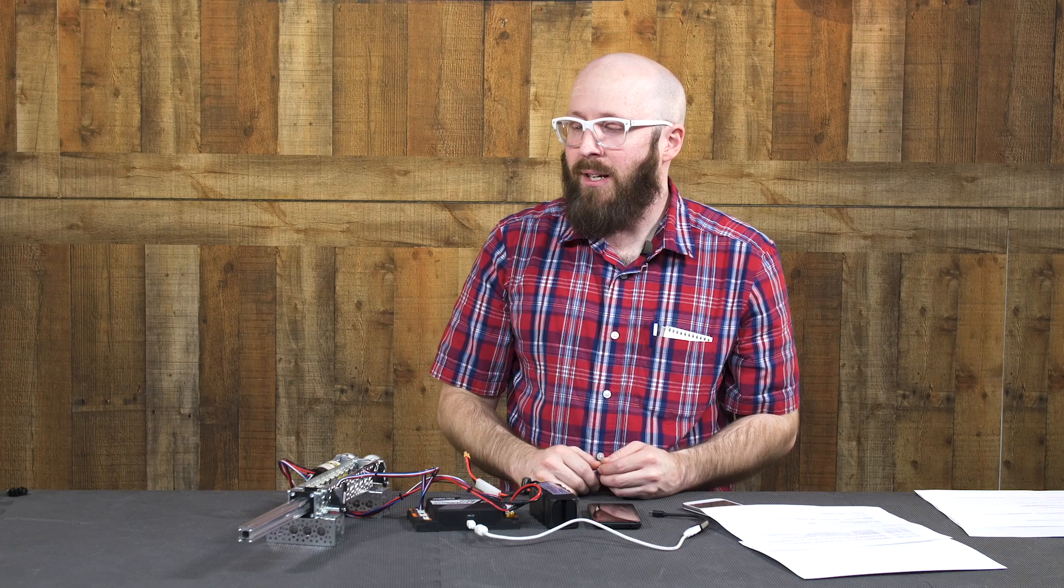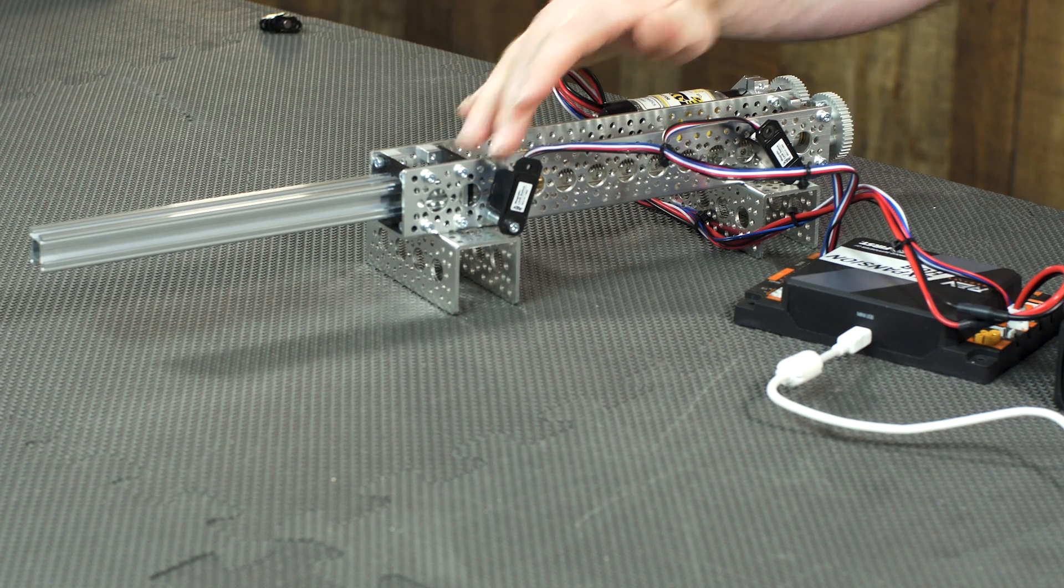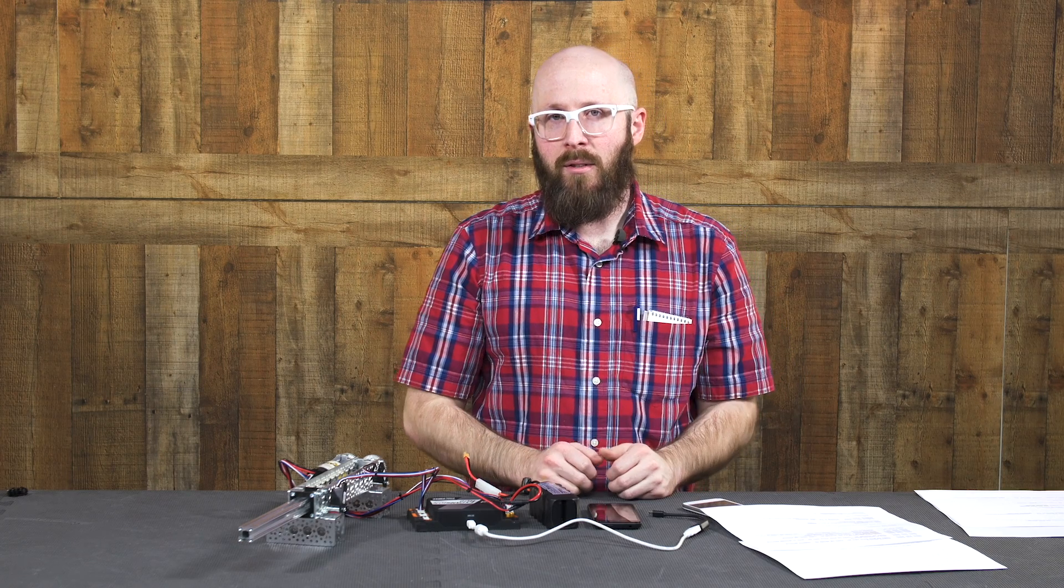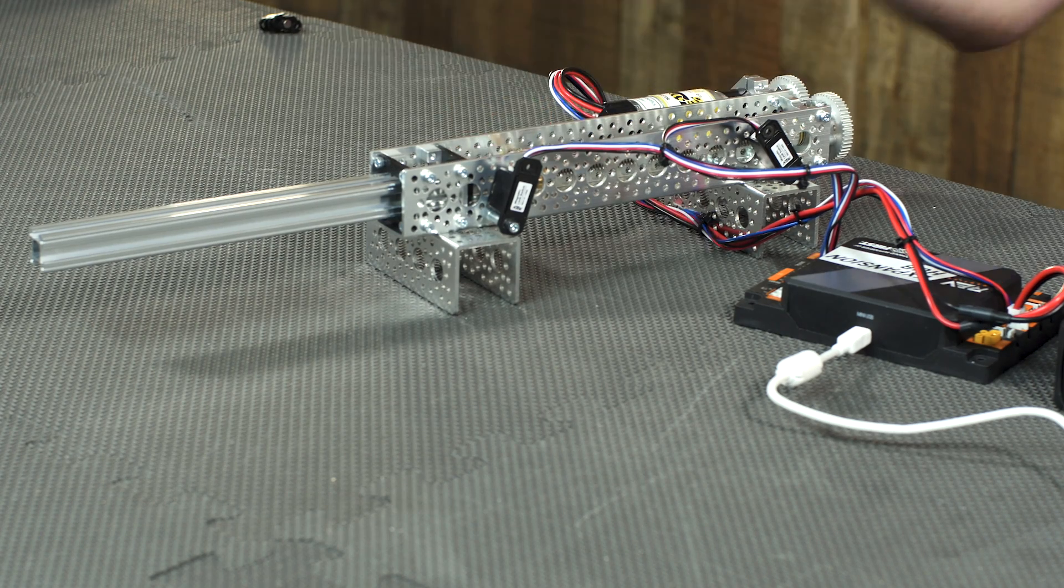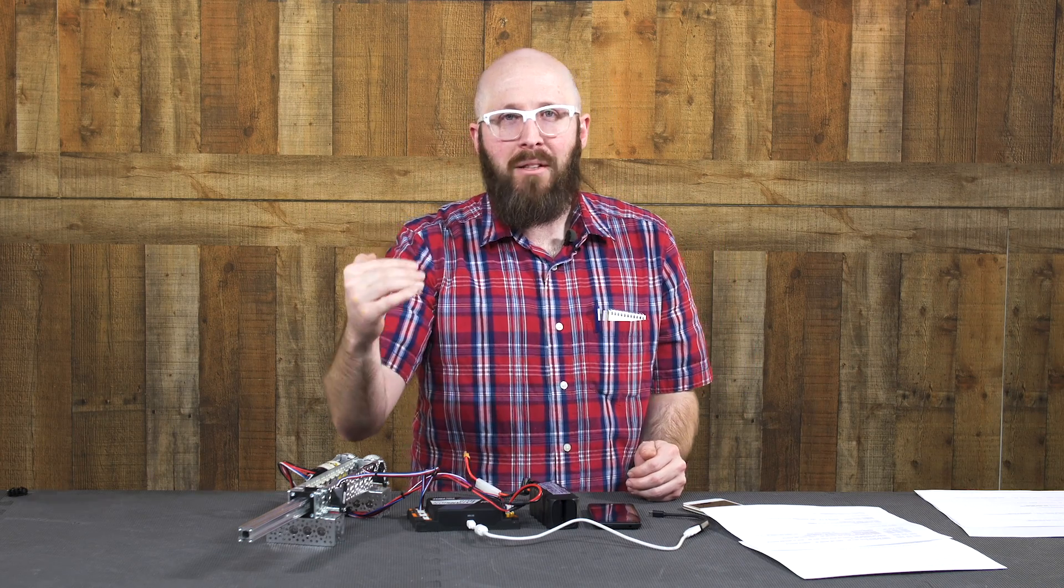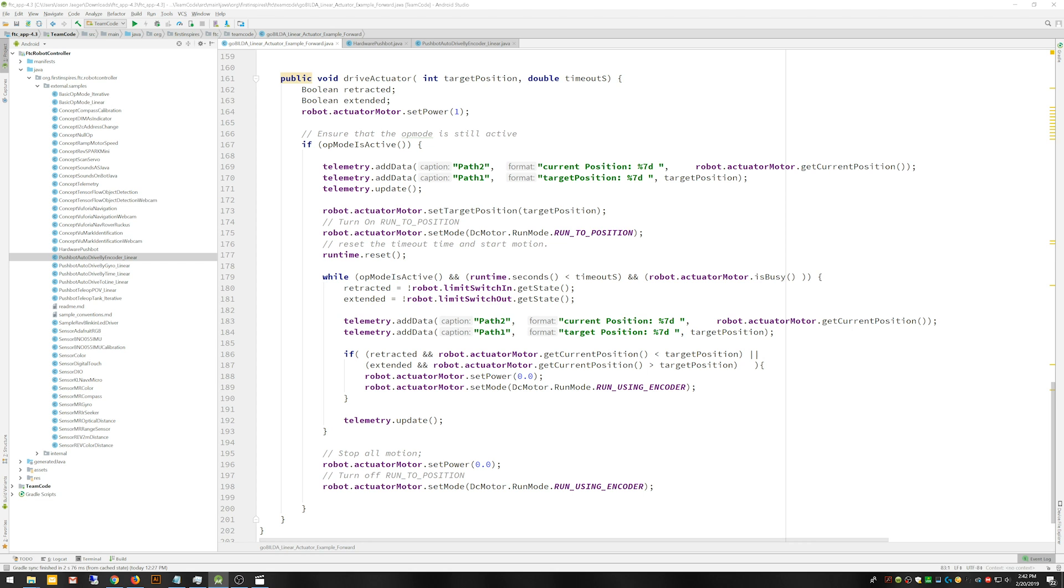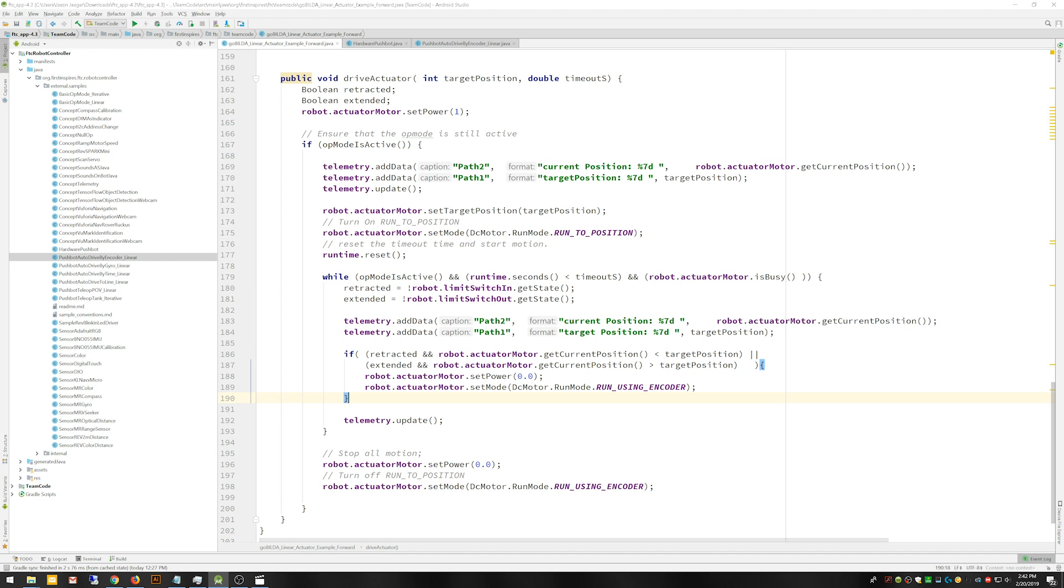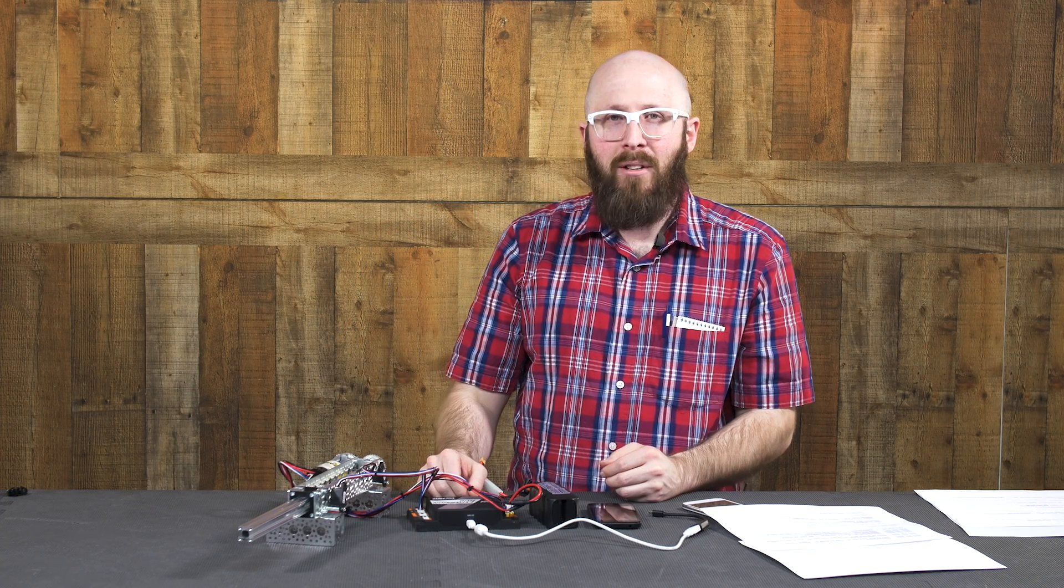The sensor on the extension side here, that's sensing when it's fully extended, that's mostly just used as a kill switch. So my stopping point should be a little bit before that. If I get to the point where I actually activate that sensor, I've got code in there that'll just turn it off. Or basically it'll allow it to retract, but it won't allow it to extend anymore. And same thing with the sensor on the retraction side. If it activates this sensor while it's running, it'll allow it to extend, but it won't allow it to retract any further. So those kind of just give me a safety net.